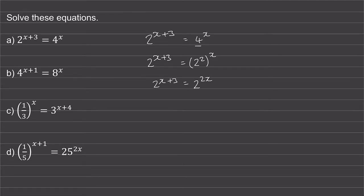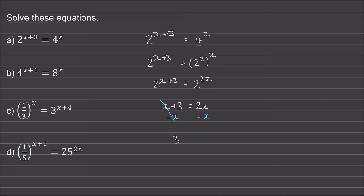Now because the equation is equal and the bases are the same, these two powers must also be the same. So we can say x plus 3 is equal to 2x. Now we can solve this equation by taking away x from both sides — these two will cancel — so we're left with 3 is equal to 2x minus x, which is just x.